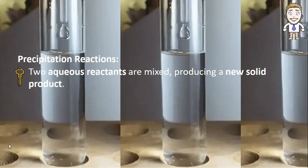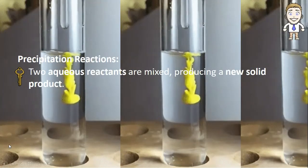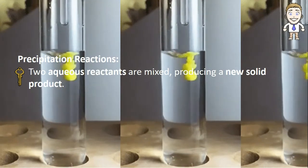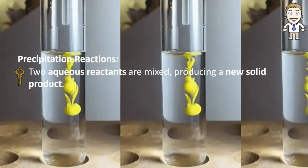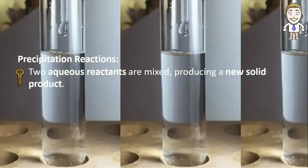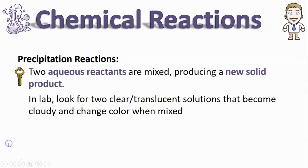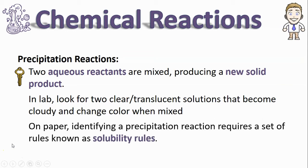Here these two solutions produce a yellow solid that kind of sinks to the bottom. That's also why they're called precipitation reactions—because your new solid tends to snow or rain or kind of sink down to the bottom, just like precipitation falls out of the sky. Now on paper, to identify a precipitation reaction you'll need a set of rules known as solubility rules.